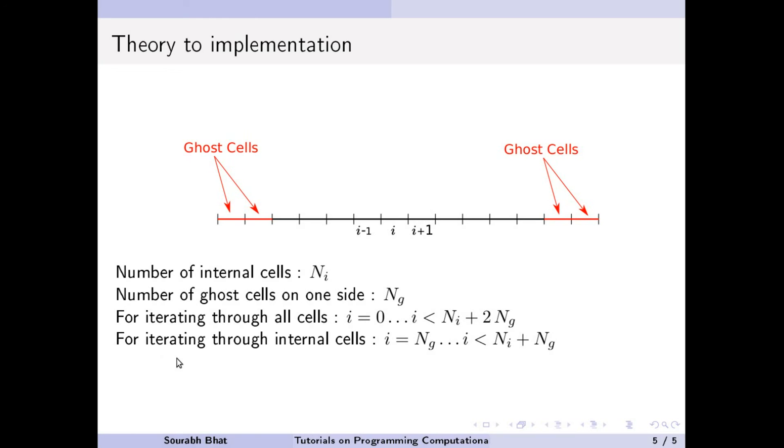For iterating through internal cells, however, we go from Ng up to Ni plus Ng. So if you see, we have two cells on the left. So these two cells are going to indicate where our index will start. Since we are starting from 0 at the left hand side, Ng is going to be 2 and we are going to go up to Ni plus Ng. That is 1 less than Ni plus Ng.